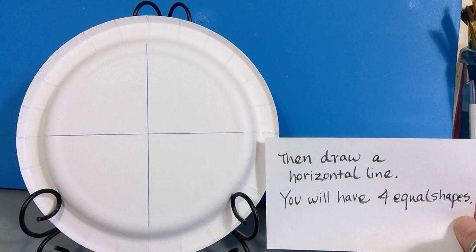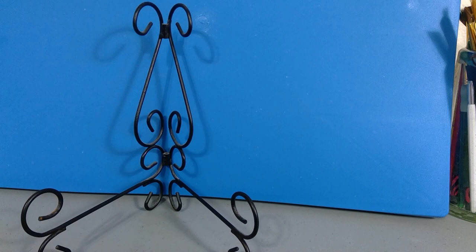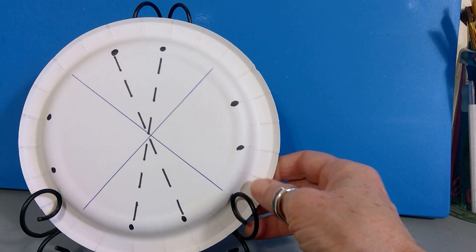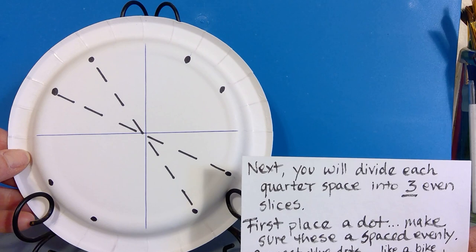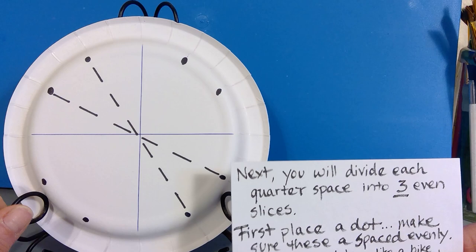Now this next section is a little bit different. This part is a little trickier. You're going to divide each of the quarters that you just had. Here's your vertical line. Here's your horizontal line. And you're going to divide the quarter into three even slices.